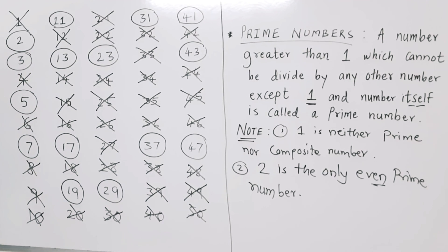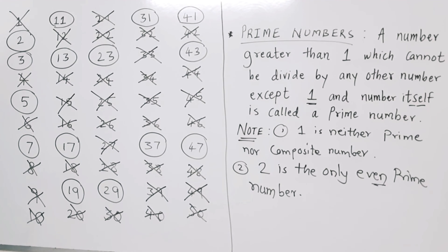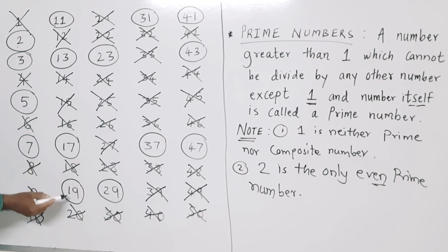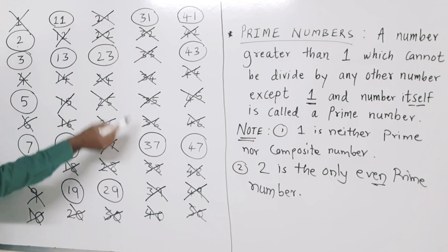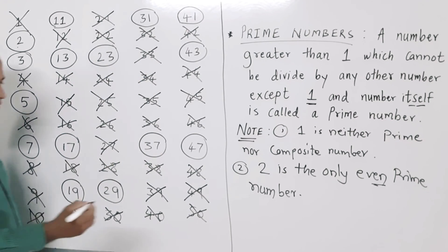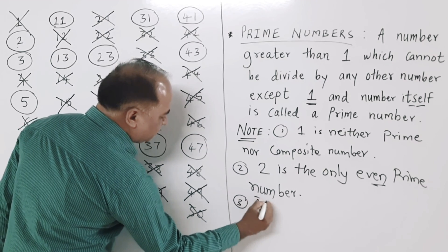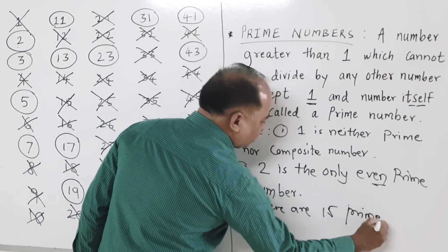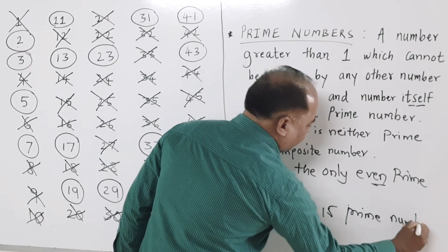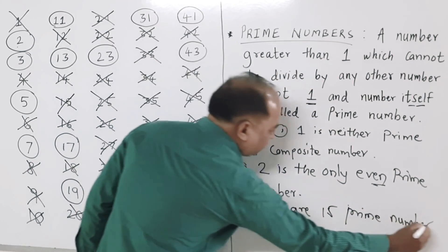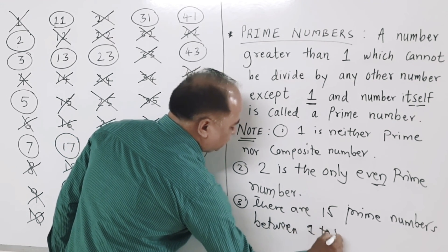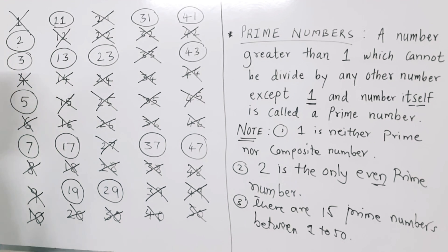So the total prime numbers between 1 and 50 are: 2, 3, 5, 7, 11, 13, 17, 19, 23, 29, 31, 37, 41, 43, and 47. There are 15 prime numbers in all between 1 and 50. The numbers that are circled in the list are the prime numbers.